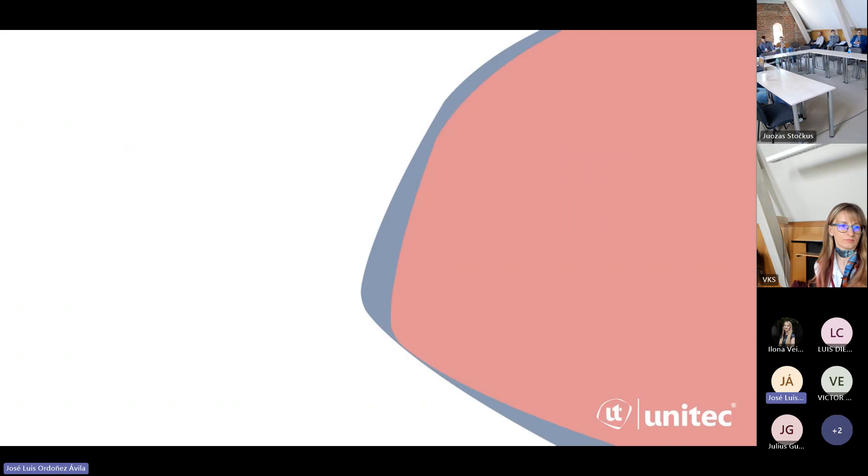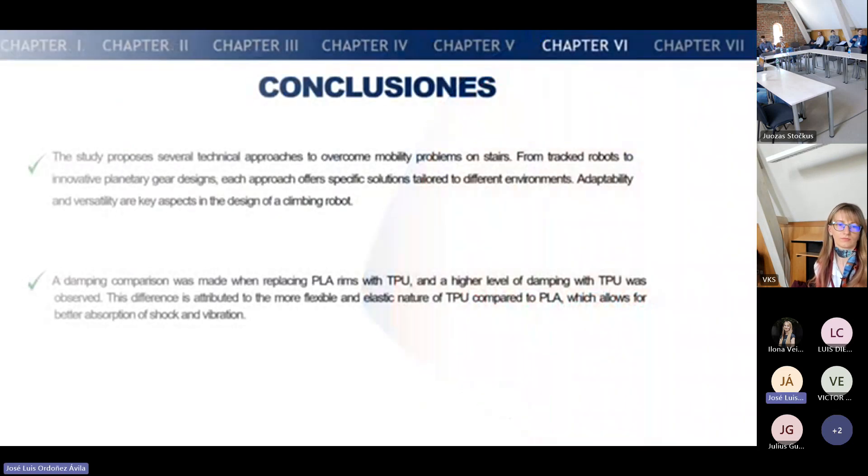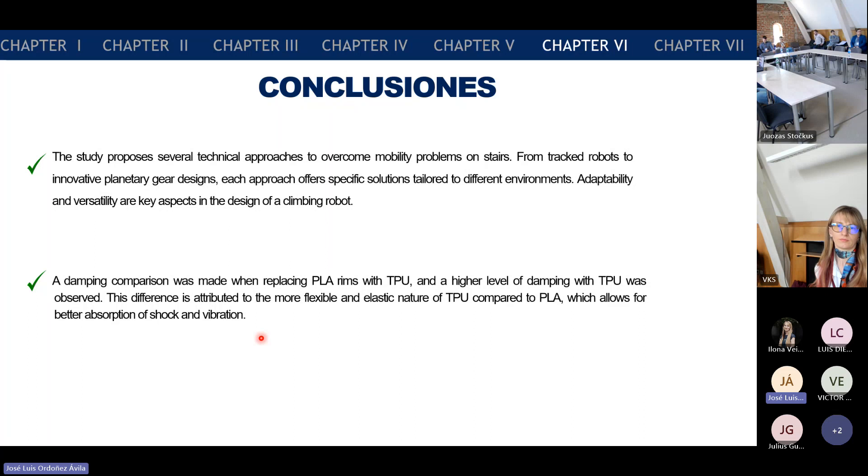For conclusion, the study processed several techniques and approaches to overcome mobility problems on stairs, from track robots to innovative planetary gear designs. Each approach offers specific solutions tailored to different environments. Adaptability and versatility are key aspects in the design of a climbing robot. A damping comparison was made when replacing PLA rims with TPU, and a higher level of damping with TPU was observed.